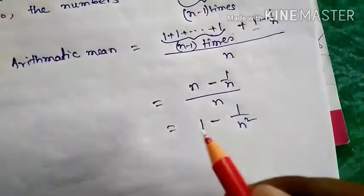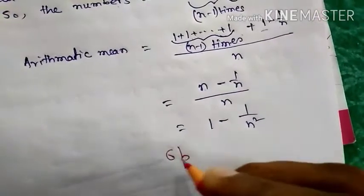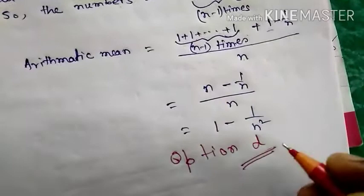So it is 1 minus 1 by n square. So option d is correct. Option d is the correct answer.